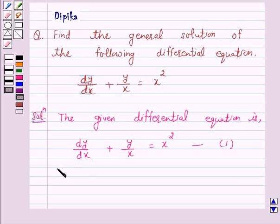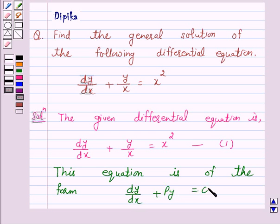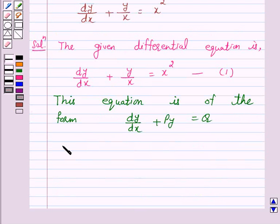Now, this equation is of the form dy by dx plus py is equal to q, where p is equal to 1 over x and q is equal to x squared.